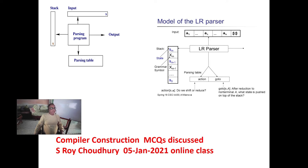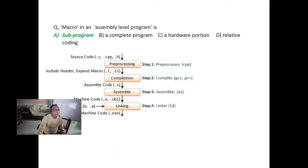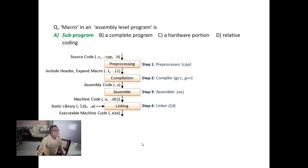Good morning. Today is the 5th of January. We are basically discussing quickly some MCQ questions in a little interactive way, so try with it. This is the first question and it is very easy: Macro is an assembly language programmer. What is the answer?